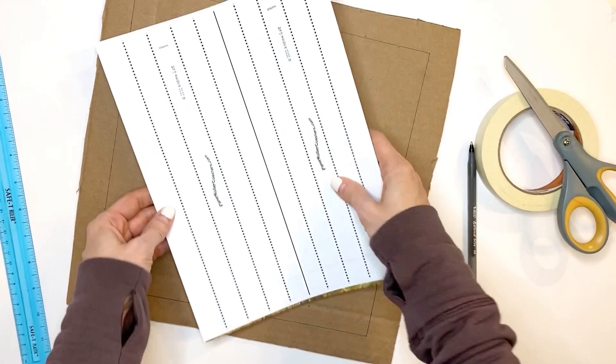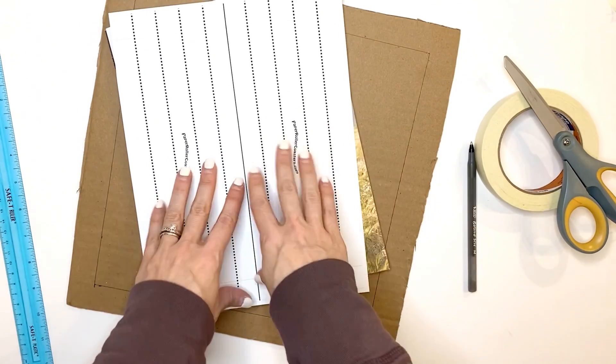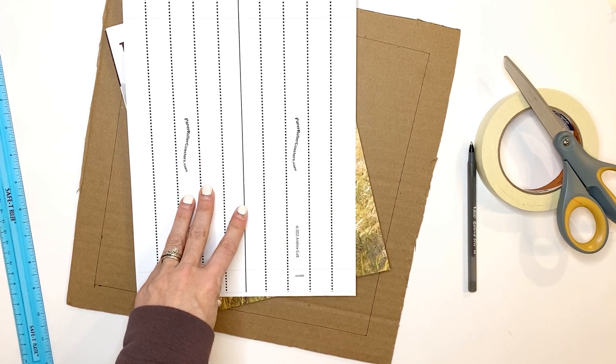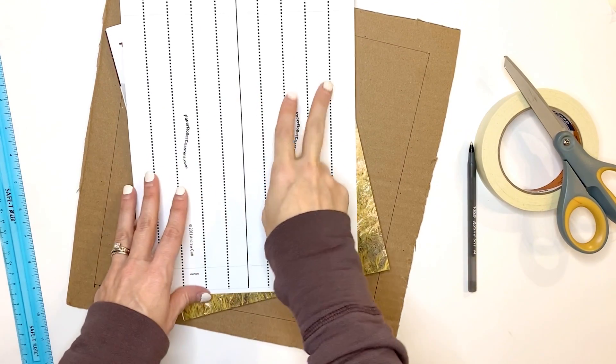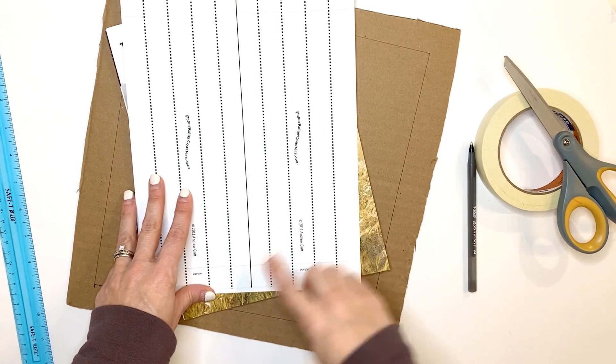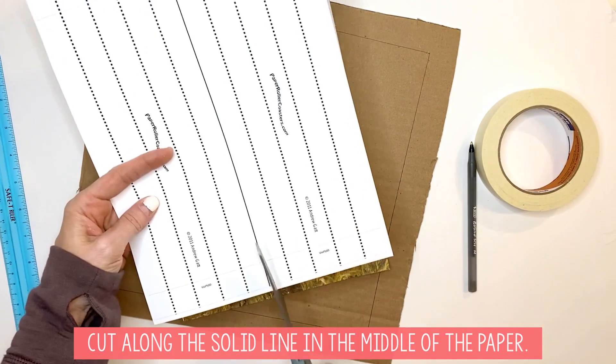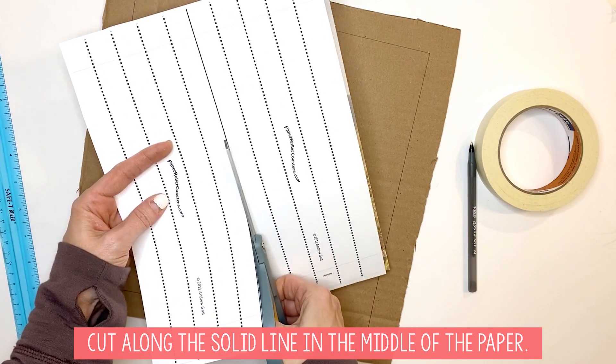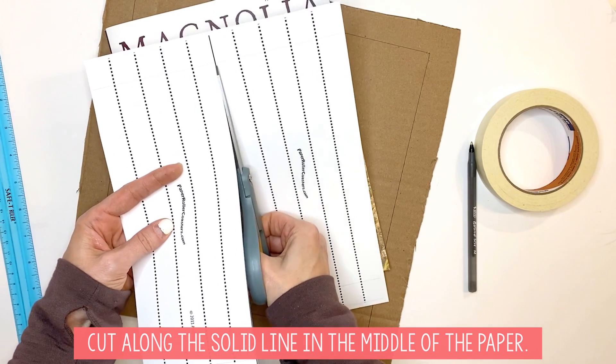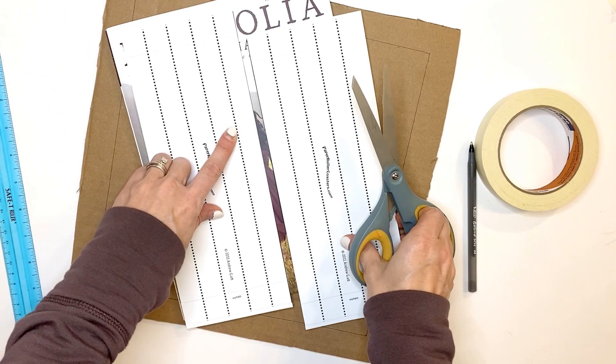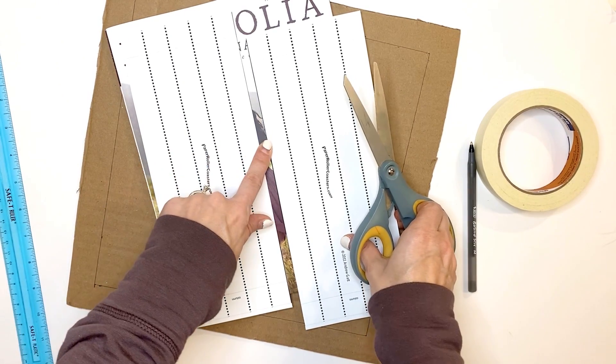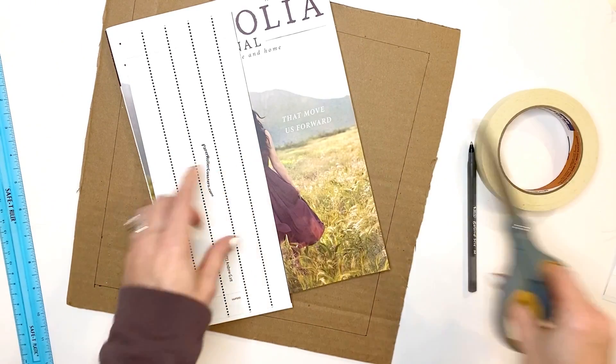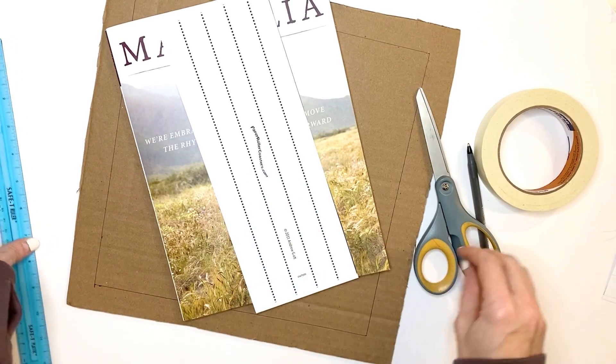One sheet of paper roller coaster template will give you two different columns. You'll see a solid line right down the middle. Whenever you see a solid line on the paper roller coaster templates, you're going to be cutting those. Dotted lines are where you fold, solid lines are where you cut. So this is one of our columns.